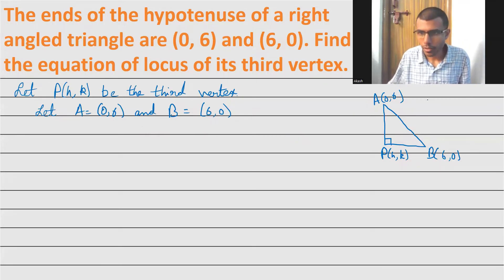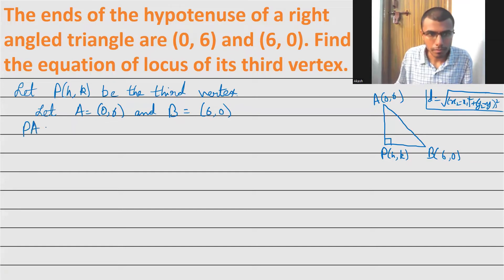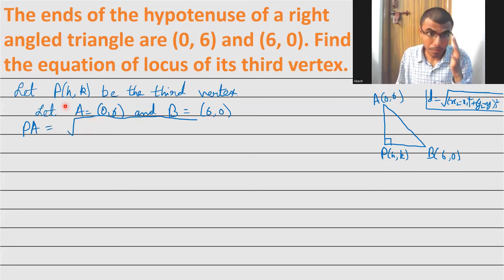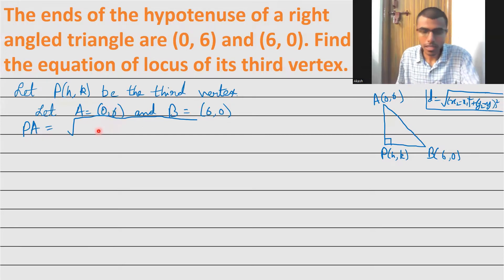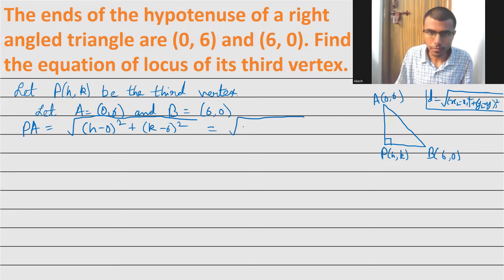The distance between any two points is: √((x₂−x₁)² + (y₂−y₁)²). For PA, taking (h,k) as (x₂,y₂) and A=(0,6) as (x₁,y₁), we get PA = √((h−0)² + (k−6)²) = √(h² + (k−6)²).